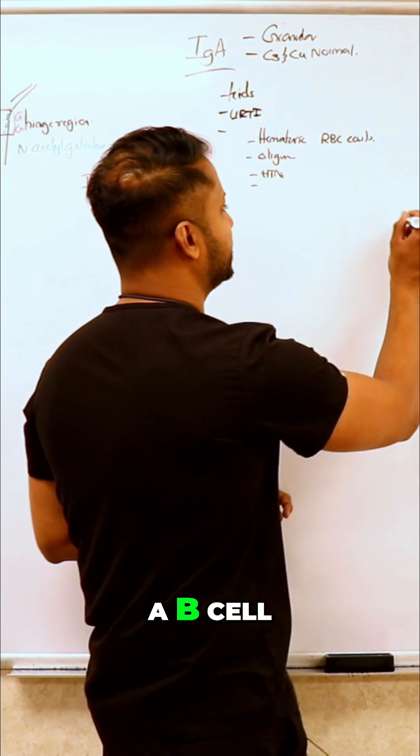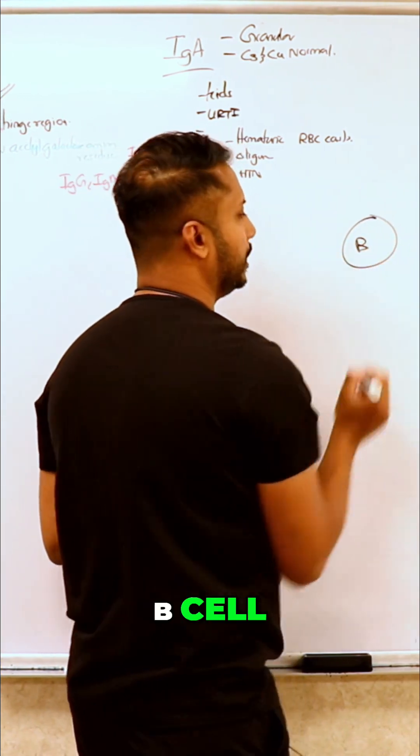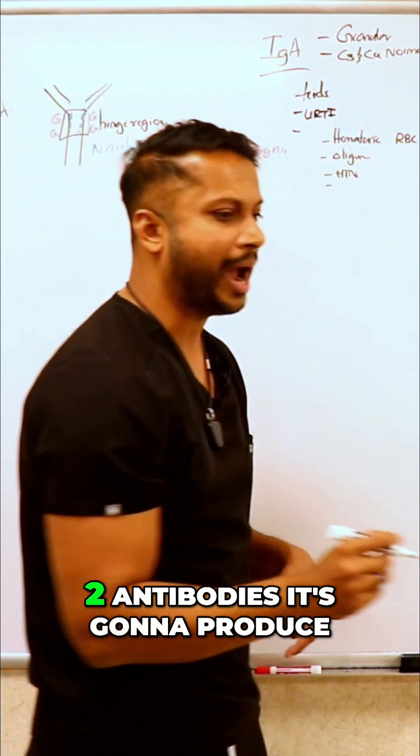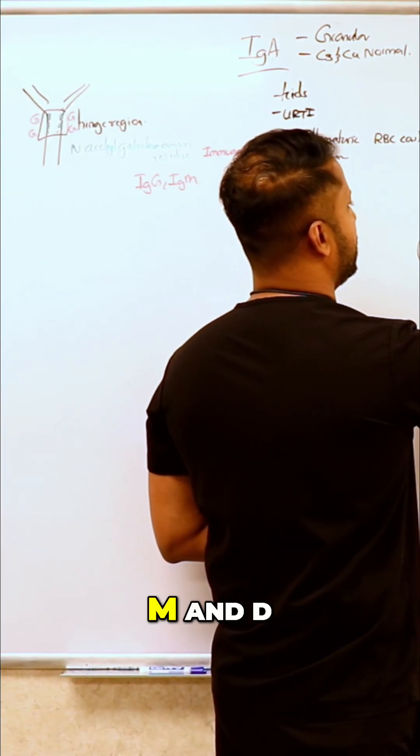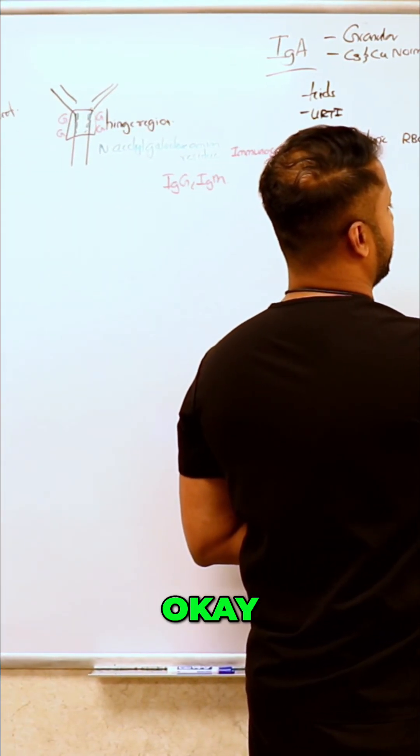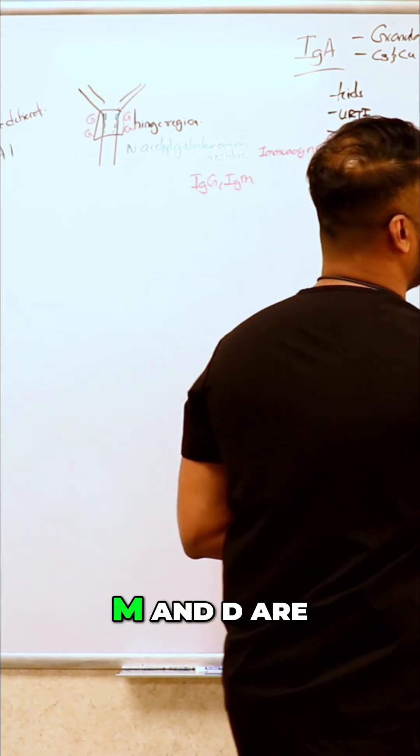You need to have what? Whenever you look at a B cell, if you take any B cell, what are the first two antibodies it's going to produce? M and D. IgM and IgD are your first two antibodies that are typically produced.